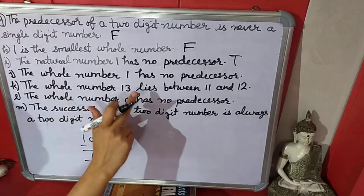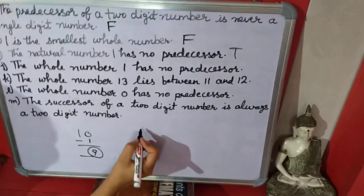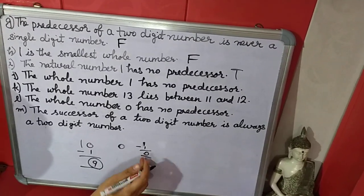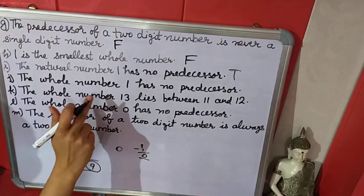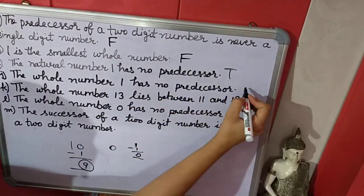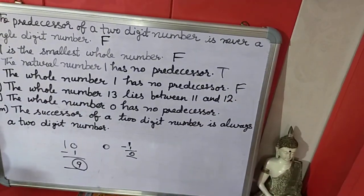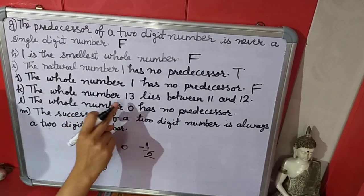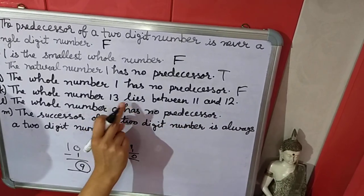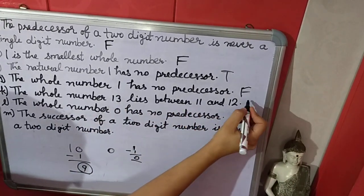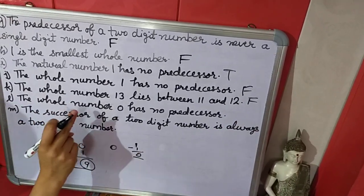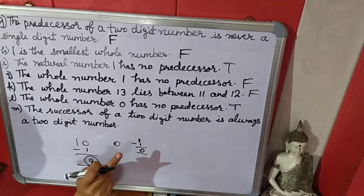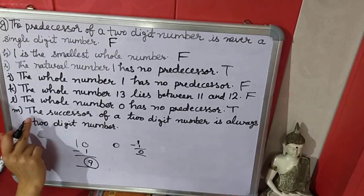Next: the whole number 1 has no predecessor. The smallest whole number is 0. If we subtract 1 from 1, we get 0, and 0 is a whole number. So the whole number 1 does have a predecessor — this statement is false. Next: the whole number 13 lies between 11 and 12 — false, 13 does not come between 11 and 12. Next: the whole number 0 has no predecessor — true, because 0 is the smallest whole number and there is nothing before it.